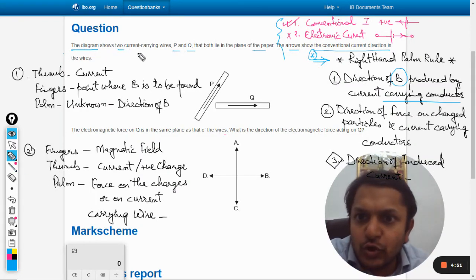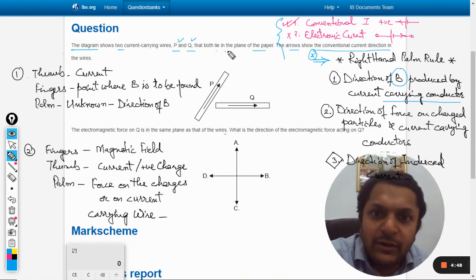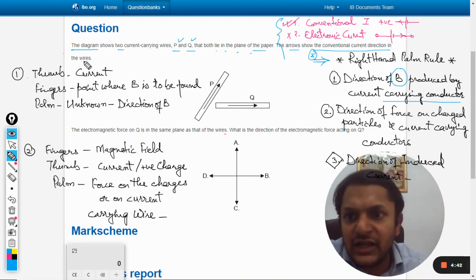The diagram shows two current carrying wires, P and Q, and both lie in the same plane. The arrow shows the conventional current direction in the wires.